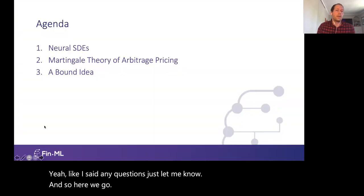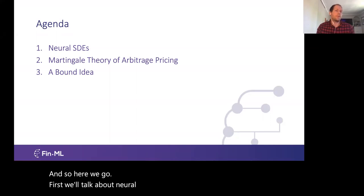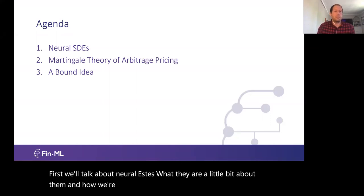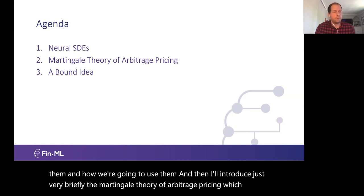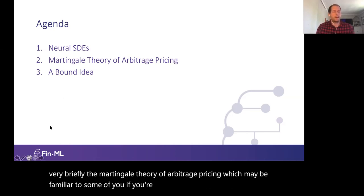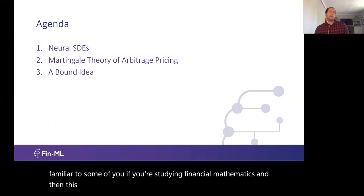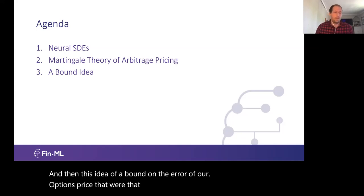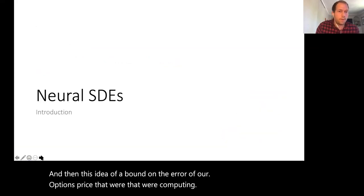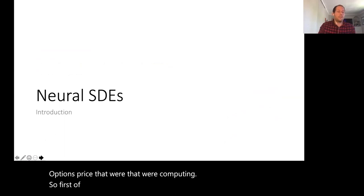First we'll talk about Neural SDEs — what they are, a little bit about them, and how we're going to use them. Then I'll introduce very briefly the Martingale Theory of Arbitrage Pricing, which may be familiar to some of you studying financial mathematics, and then this idea of a bound on the error of our computed options price.